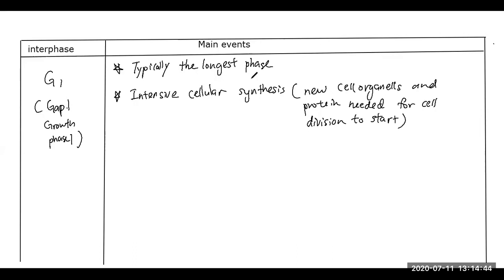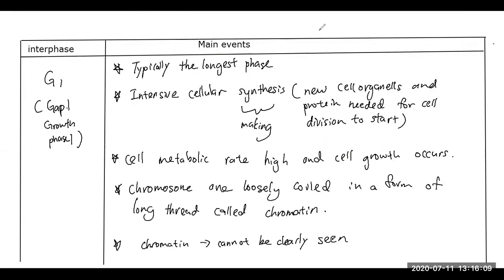When we see the word synthesis, we always want to relate it to making something or producing something. Next point, cell metabolic is high and cell growth occur. Since the cell makes new cell organelles, of course we will expect the cell to grow.